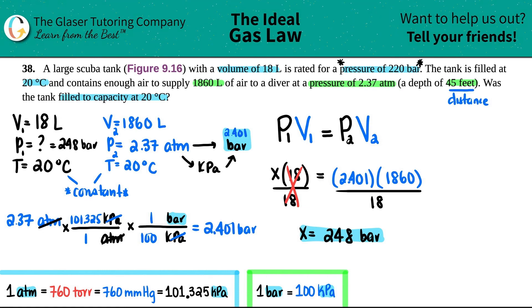So at that volume of 18 liters, this pressure now is 248 bar. Now the question was, was the tank filled to capacity? Well, it was rated at a pressure of—sorry about that guys—220 bar. That's the highest you can go. That's the max. But since this had a pressure at 248 bar, you actually overshot it. You're higher than 220. So was the tank filled to capacity? No, it was actually—oopsie—it was actually overfilled.